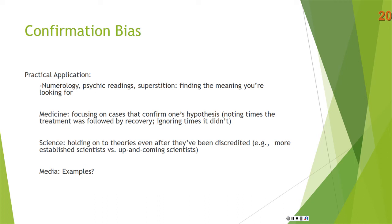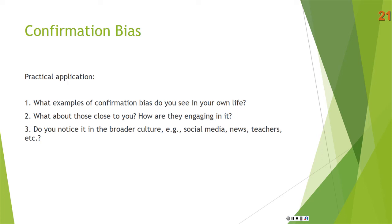The media — can you think of any examples where confirmation bias occurs? A certain media outlet that claims to be impartial, either on the left or the right, is really just focusing on things that confirm their side. A leftist outlet focuses on things that make Democrats look good, while conservative outlets focus on things that make Republicans look good, attacking the other side. What examples of confirmation bias do you see in your own life? What about those close to you? And do you notice it in broader culture — the news, social media, teachers?